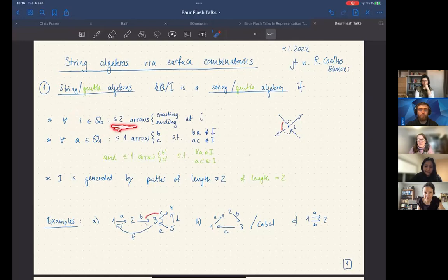And for every arrow there is at most one arrow which composes with it, such that it's not going to be zero in the algebra. So that's before or after.